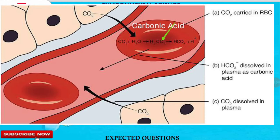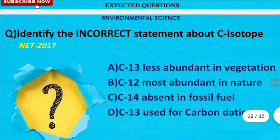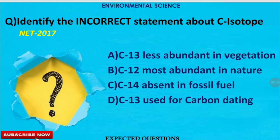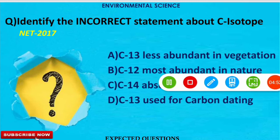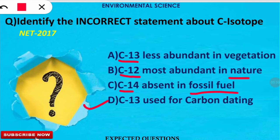The next question is: identify the incorrect statement about carbon isotopes. The correct option is option B. Carbon-13 is less abundant in vegetation but more abundant in the ocean, and carbon-12 is abundant in nature. Carbon-14 is also absent in fossil fuel. However, carbon-13 is not used for carbon dating — instead, carbon-14 is used for carbon dating, so the incorrect statement is option D.